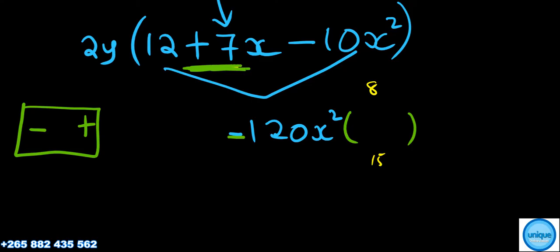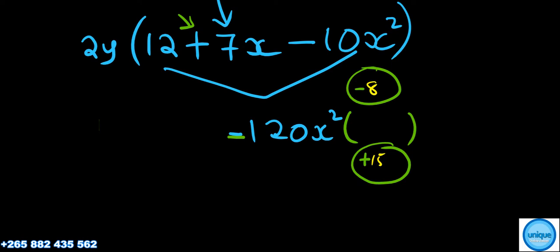One of the numbers must be positive and one must be negative. The bigger number, which is 15, will be positive and the other one, 8, will be negative.